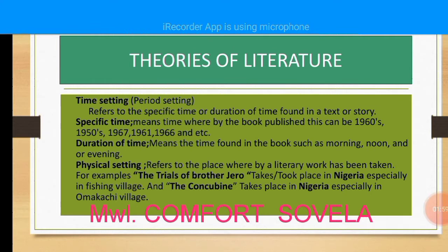Physical setting refers to the place whereby a literary work has taken place. For instance, Things Fall Apart takes place in Nigeria, especially in a fishing village. Also, The Concubine takes place in Nigeria, especially in Omokachi village. This is the physical setting — the place in which the work of art takes place.